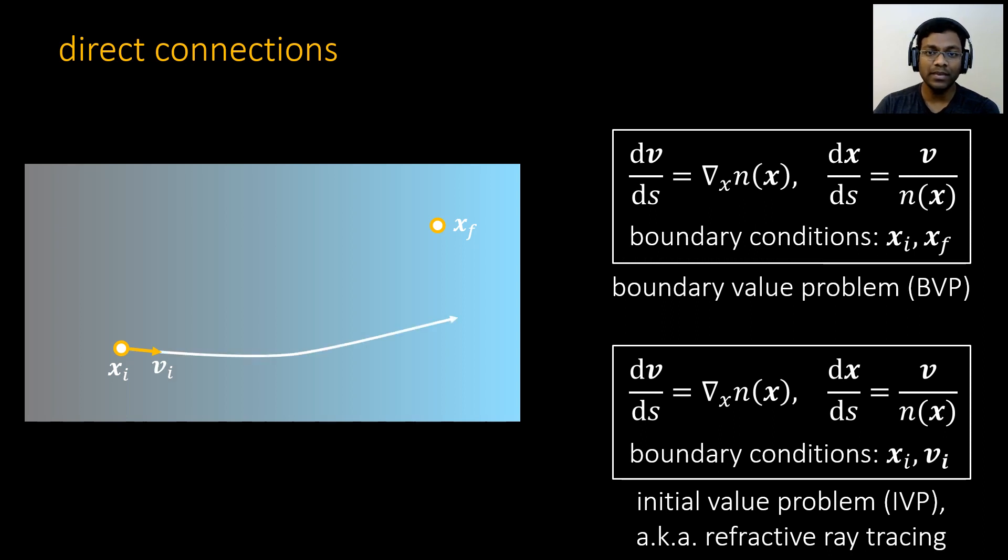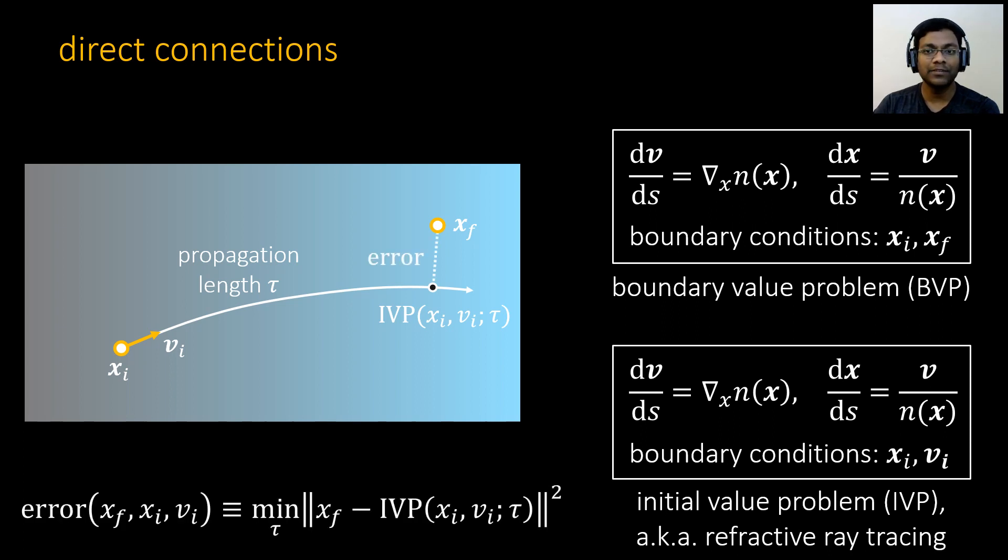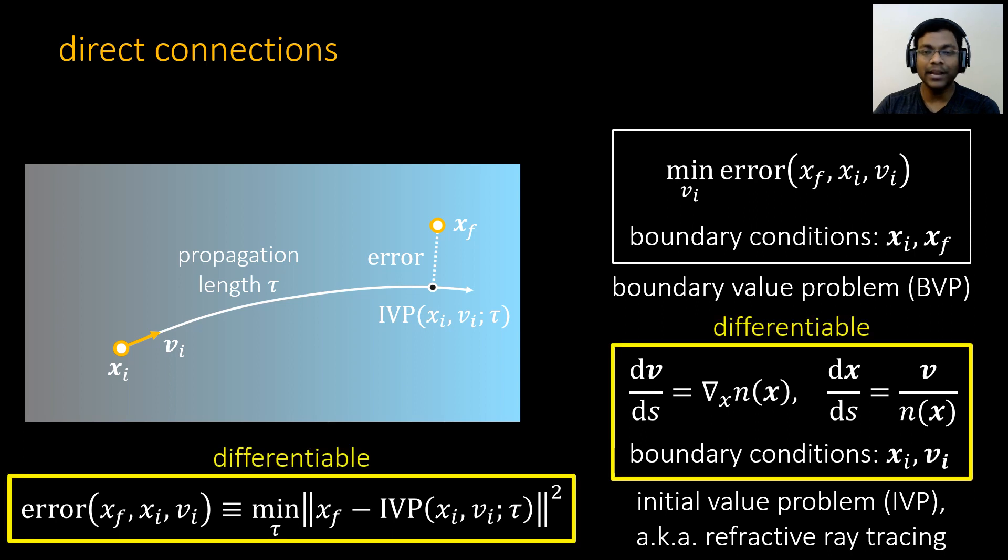As we know how to solve IVP, one way to solve BVP is to try different initial velocities and hope to find a curve that passes through xf. This is quite expensive. Instead, let us consider a point on the IVP after we do refractive ray tracing for a propagation length tau. We define error as the shortest distance between xf and the IVP curve, which we can compute by minimizing over propagation length tau. Note that this error is a function of initial velocity vi. Now, we can restate BVP as a solution that minimizes this error while varying vi. Fortunately, both the error and the IVP are differentiable, and we can compute the derivative of the error with respect to vi analytically with little overhead.